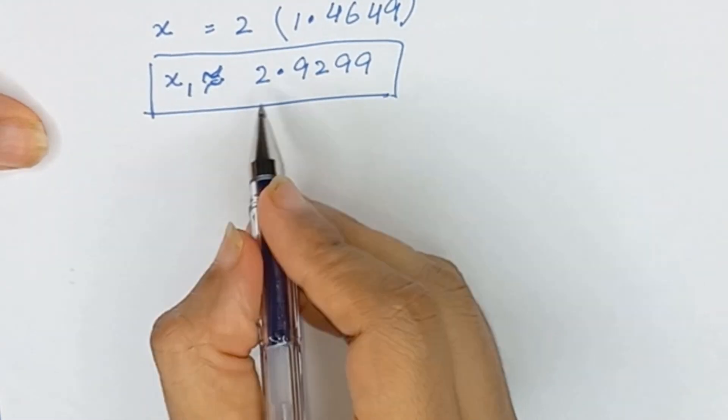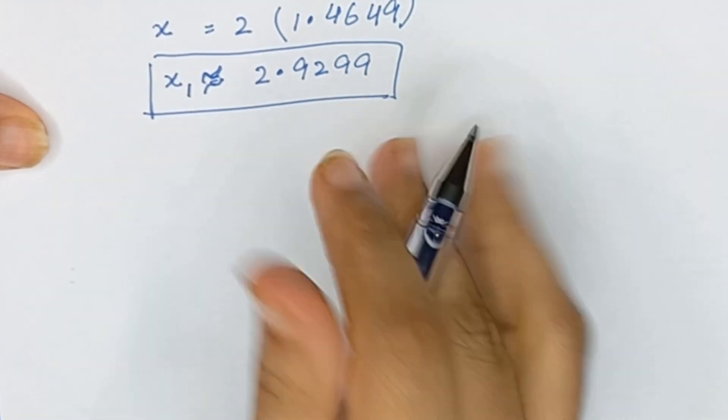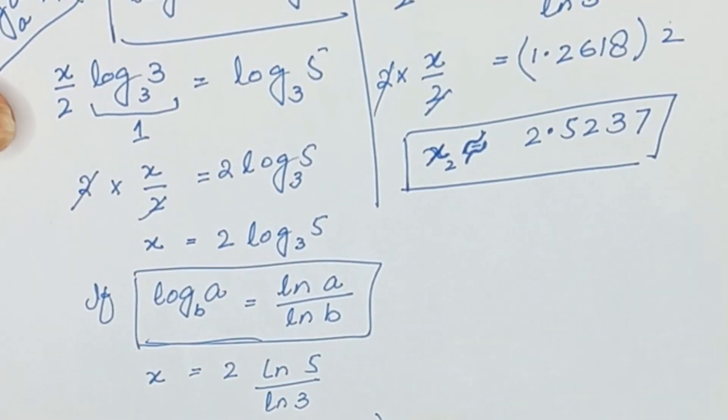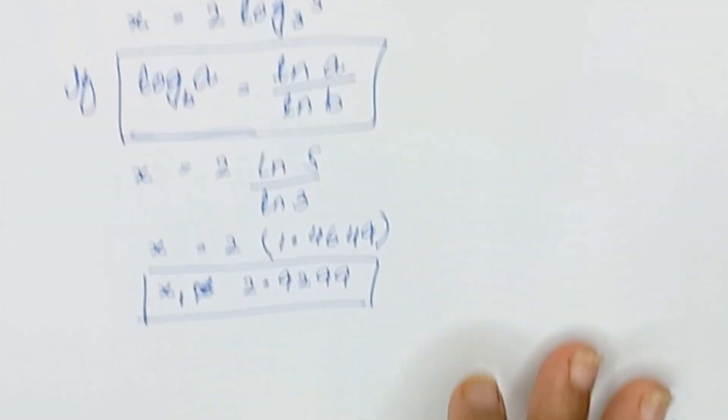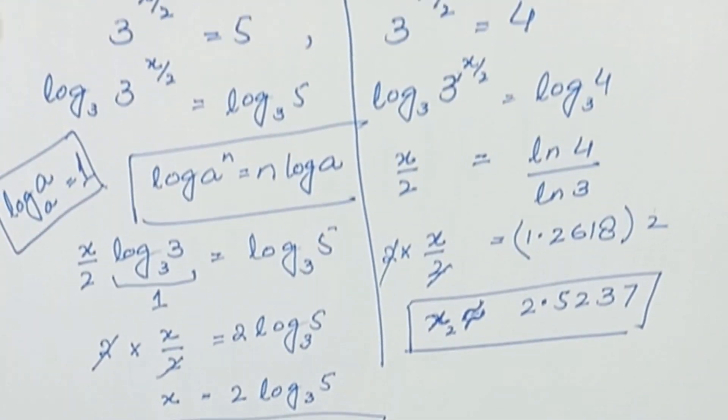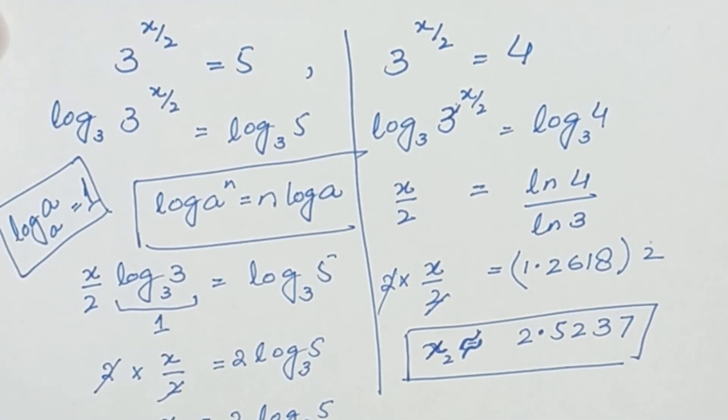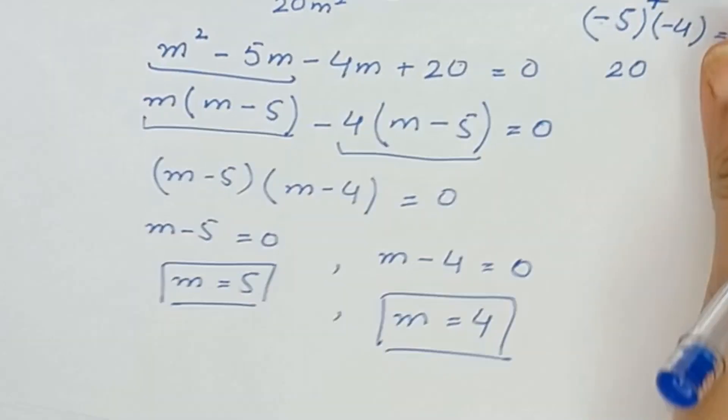So our two values are x₁ equals 2.929 and x₂ equals 2.5237. Thanks for watching. I hope you liked this video. If you did, don't forget to subscribe to my channel. Bye!